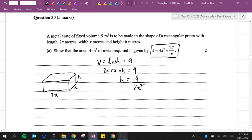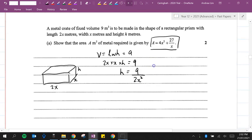Alright, so show that the area of metal required means we need to actually work out the surface area. So the surface area is going to be 2 lots of 2x times x. Okay, so that's for this bit, for the top and bottom.